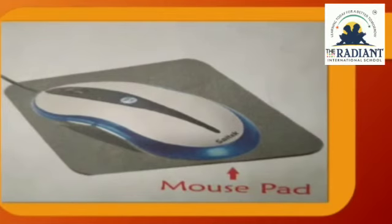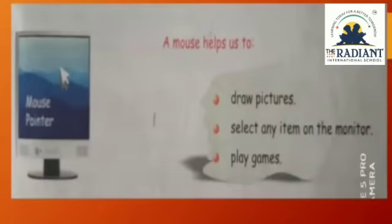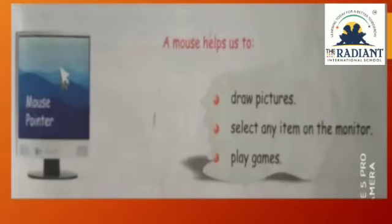Look at the picture here — mouse picture is there and mouse pad is there. A mouse helps us to: number one, draw pictures; number two, select any item on the monitor — if we want to select any item on a monitor, we can select through the mouse. And play games — it is difficult to play with a keyboard, because when we are going to play on a computer, the mouse is the very easiest way to play.